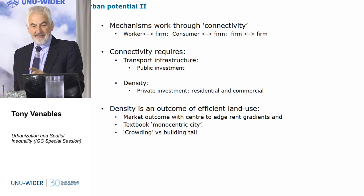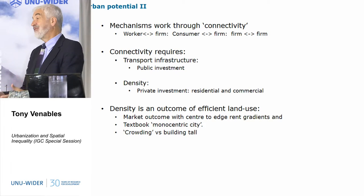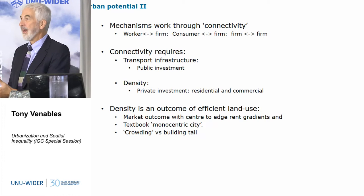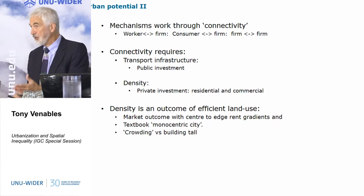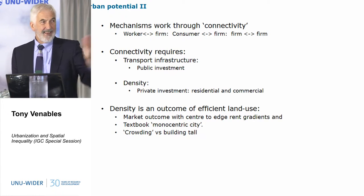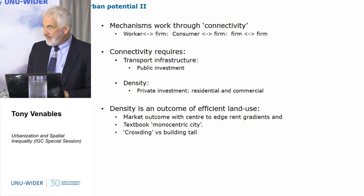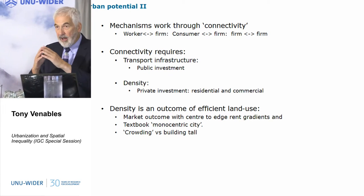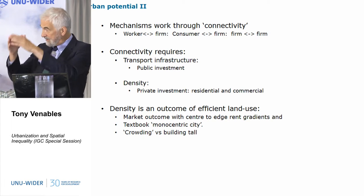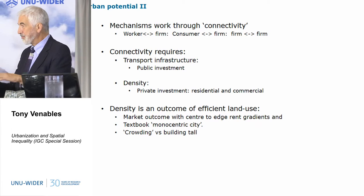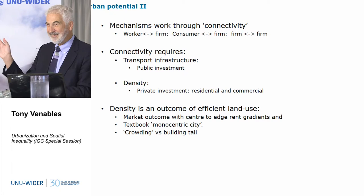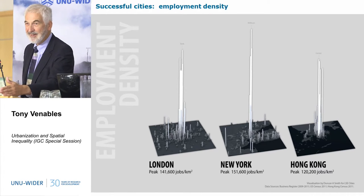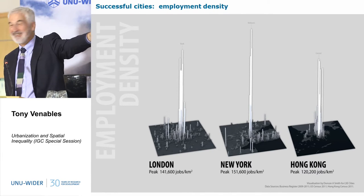Density is one aspect of efficient land use. If people are trying to get to the centre to work, land values will be high, and an efficient allocation creates an incentive to build tall, which supports density. The textbook monocentric city has rent gradients — land prices are high in the centre, creating the incentive to be dense, then tailing off. This isn't just textbook: looking at employment density in London, New York, and Hong Kong, you see they really are monocentric. London gets about 150,000 workers per square kilometre in the centre — fantastic density.